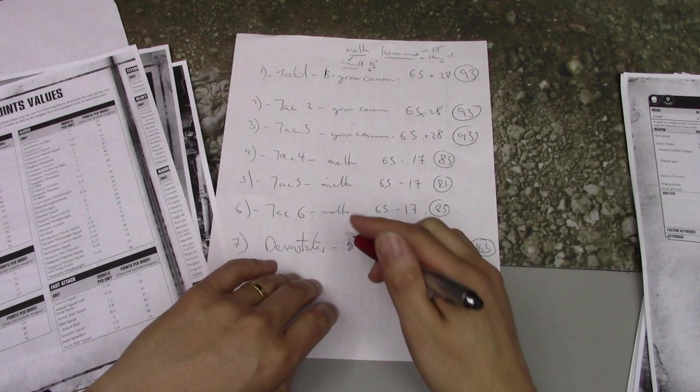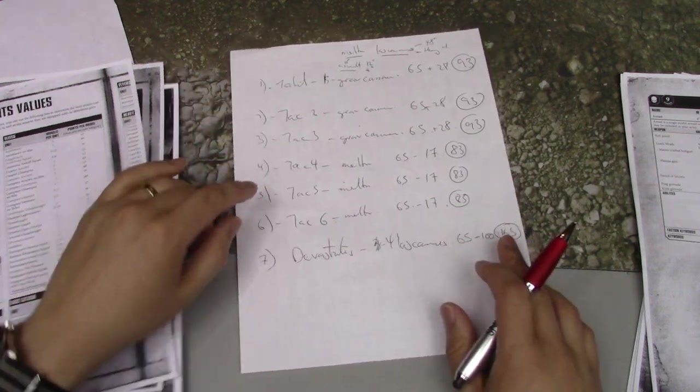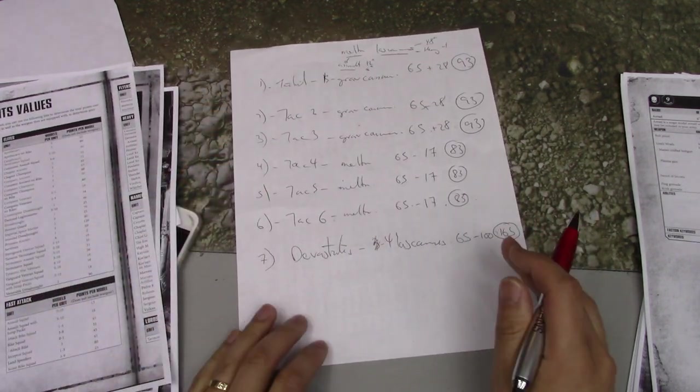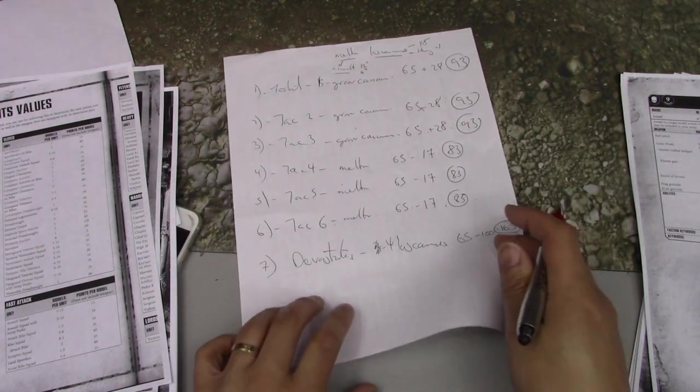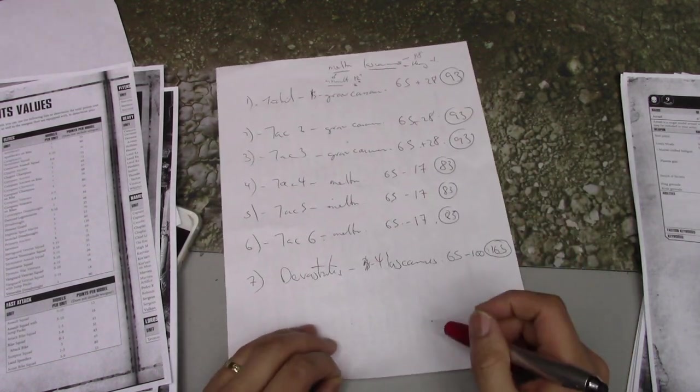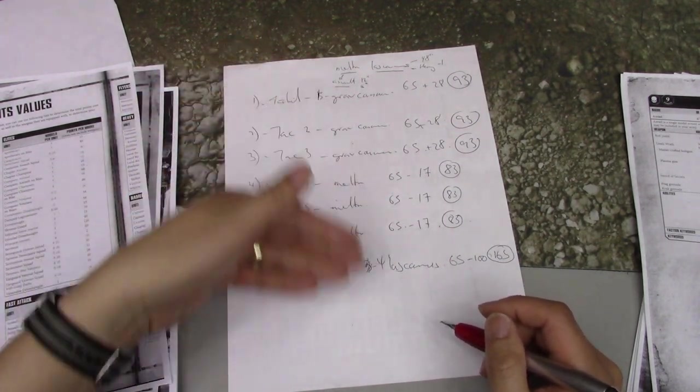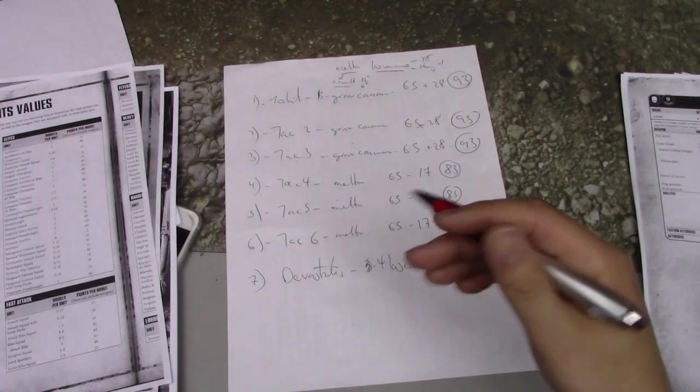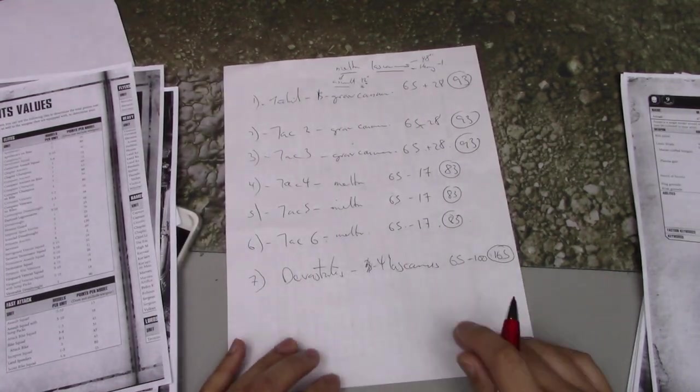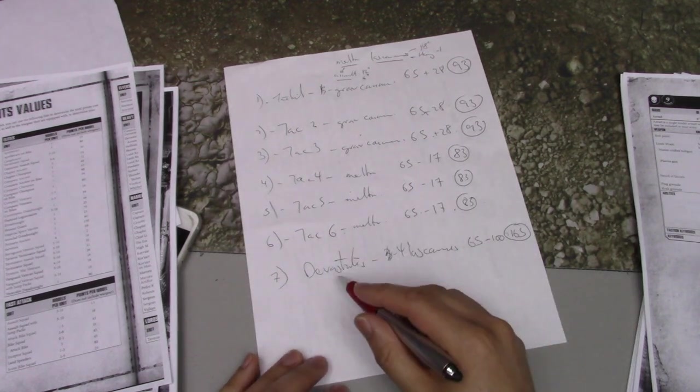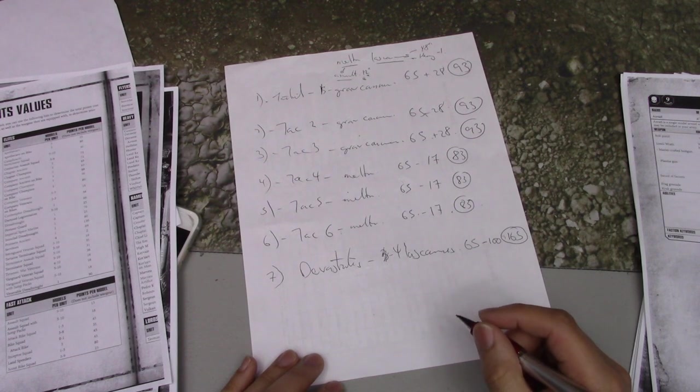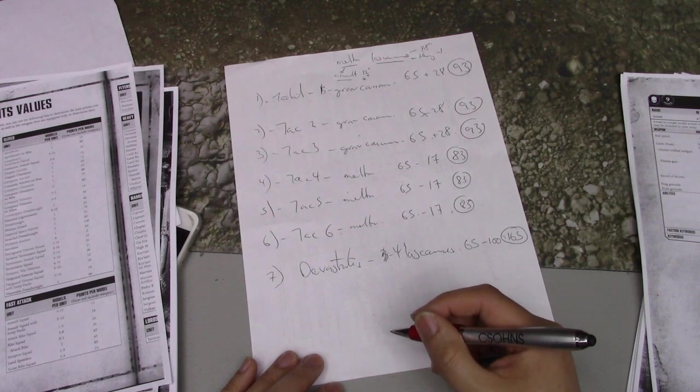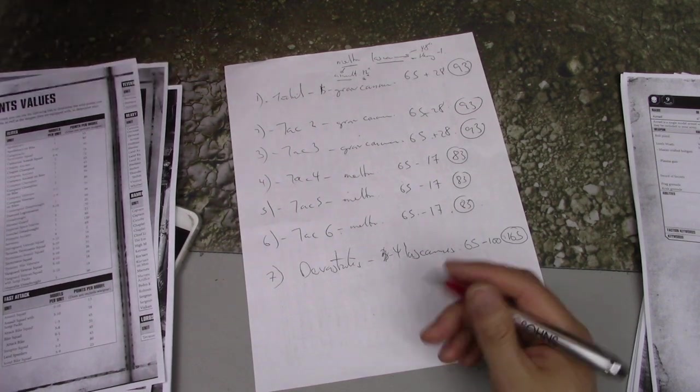24 wounds is a lot to go through. So I decided I will take one squad of devastators rocking four lascannons. What these guys are going to do is sit in the backfield somewhere, use their range in cover and plink away wounds. That's going to be 65 for these guys and lascannons are 25 each, so that's another hundred points on lascannons. So these guys are actually rocking in at 165 points.